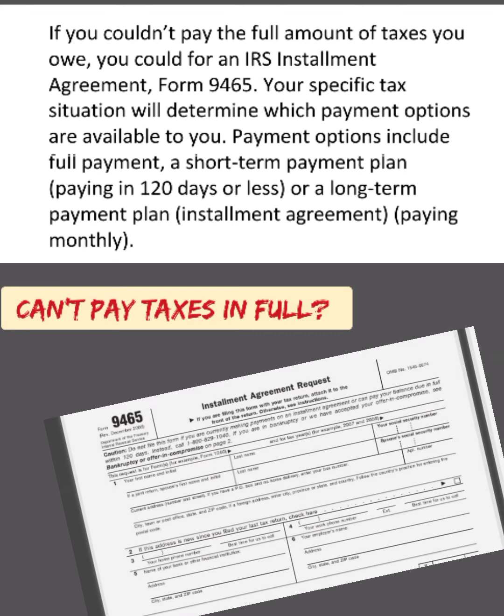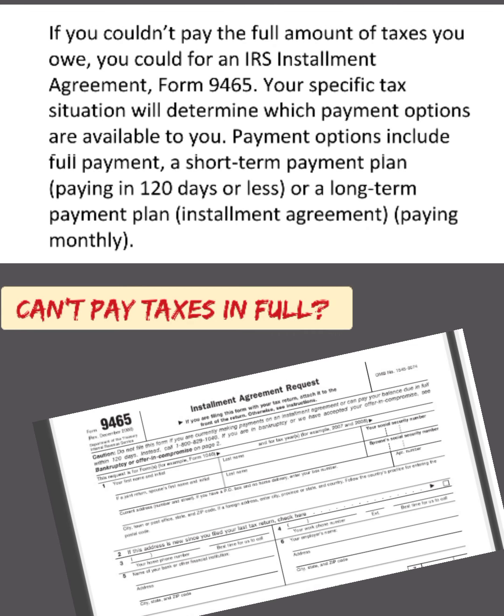If you couldn't pay the full amount of taxes you owe, you could request an IRS installment agreement, Form 9465. Your specific tax situation will determine which payment options are available to you. Payment options include full payment, a short-term payment plan paying in 120 days or less, or a long-term payment plan installment agreement paying monthly.